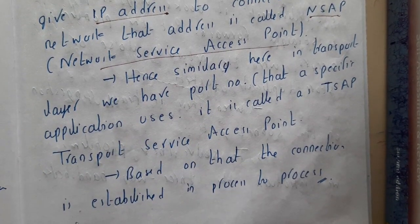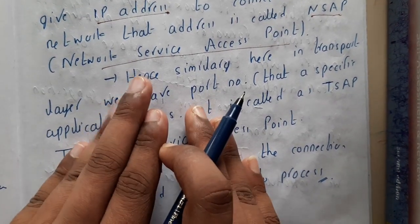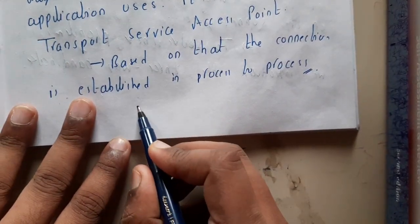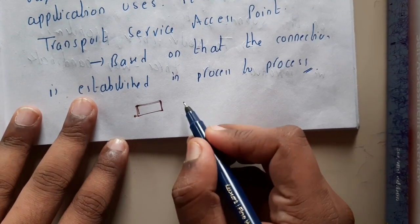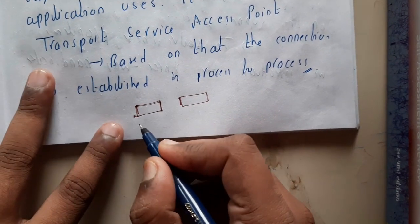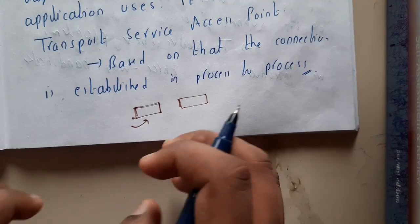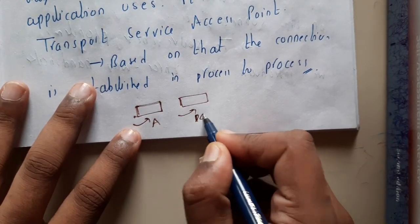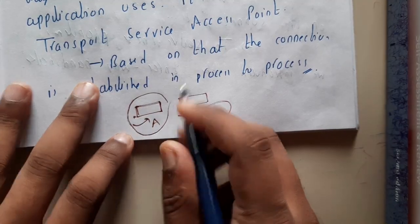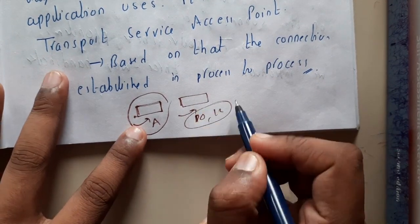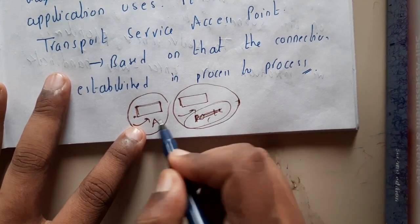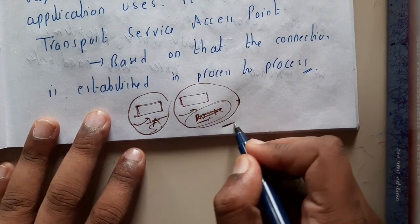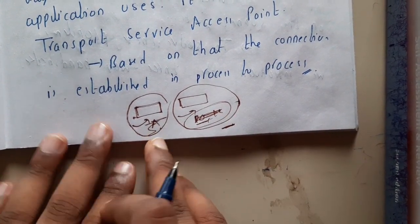In the transport layer, along with the IP address you also specify the port number. The IP address is used by the network layer to reach the network. Think of it like a city address: first you say the area name, then the street number — that's the IP address giving you the approximate location. The port number is like the exact house number, and that is what the transport layer provides.